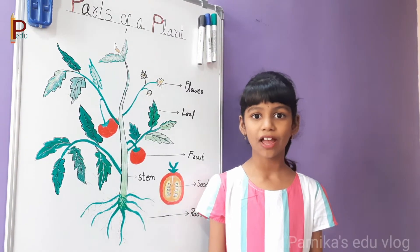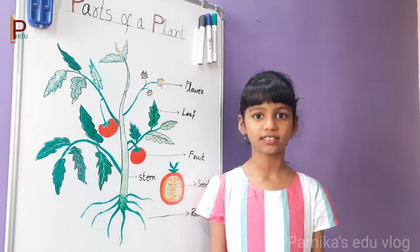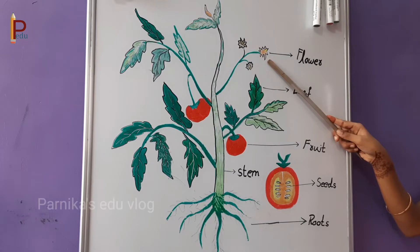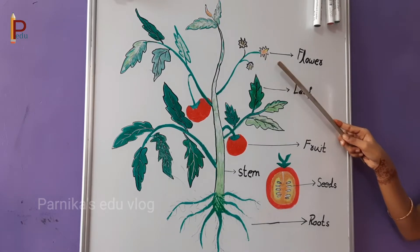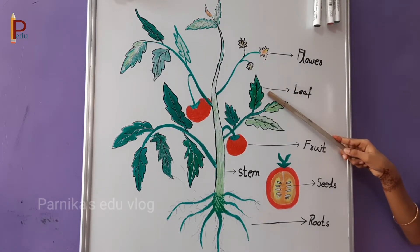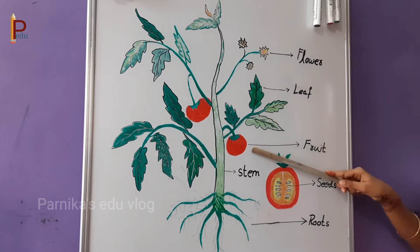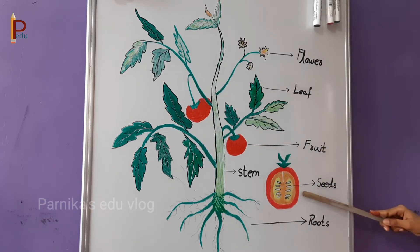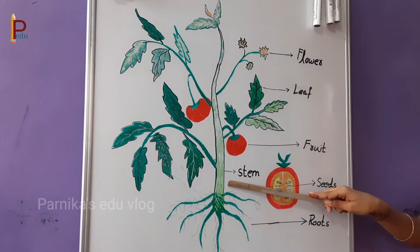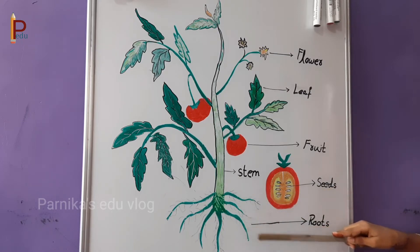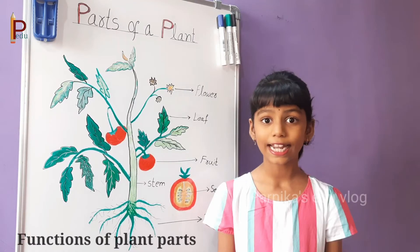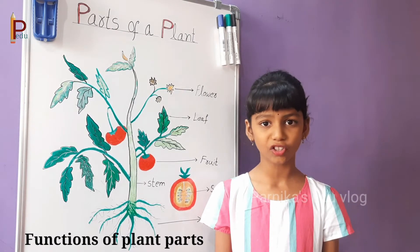Plants have six basic parts: flowers, leaf, fruit, seeds, stem, and roots. Let us know their functions.